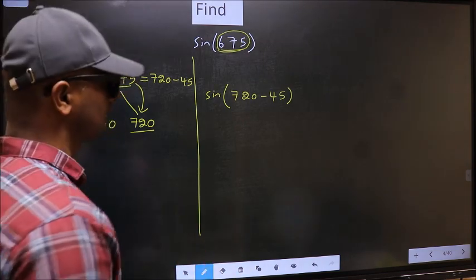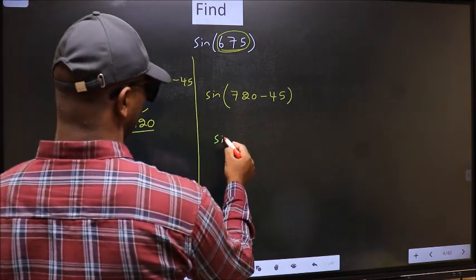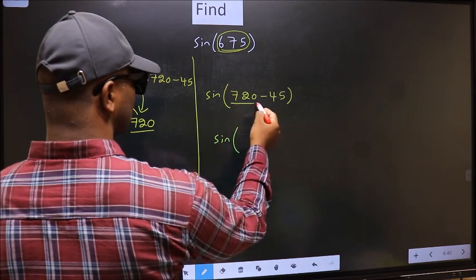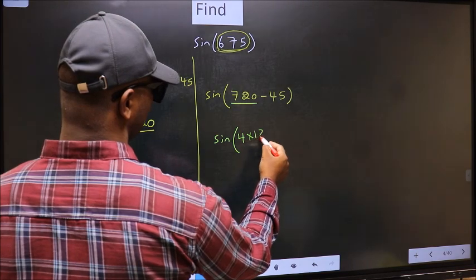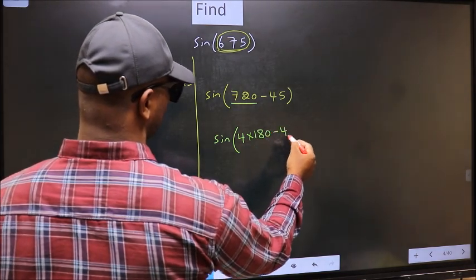Next, sin in place of 720. Now we should write 4 × 180 minus 45.